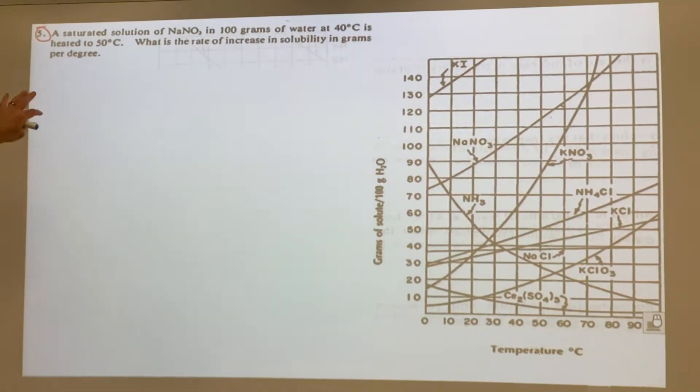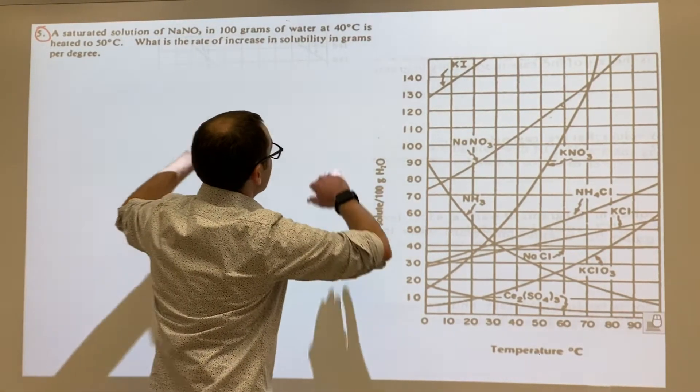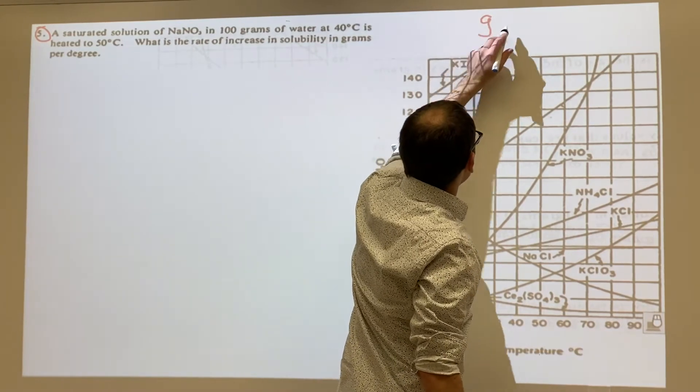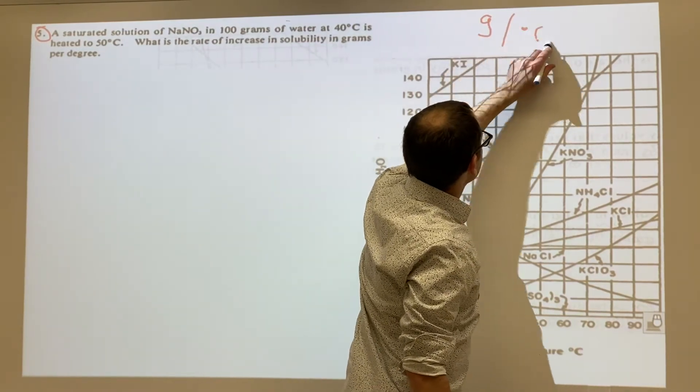For this problem, it says the saturated solution of sodium nitrate in 100 grams of water at 40 degrees Celsius is heated to 50 degrees Celsius. What is the rate of increase in solid solubility in grams per degree? So the trick here is the answer they're looking for is going to be in grams per degree Celsius.